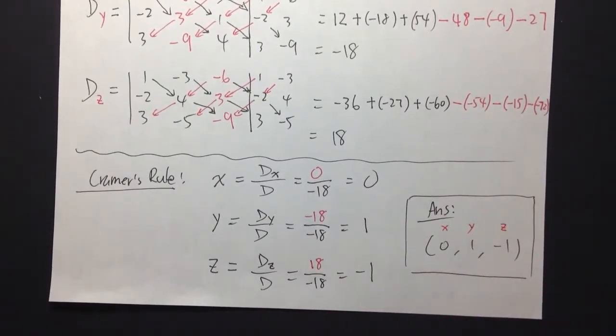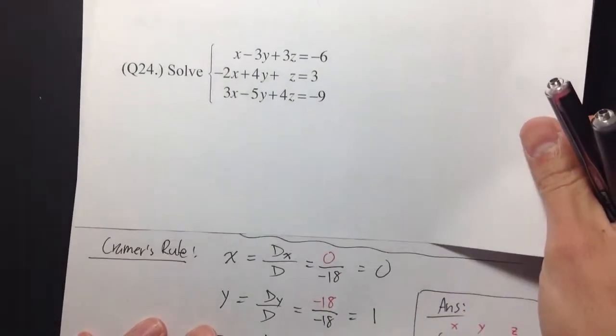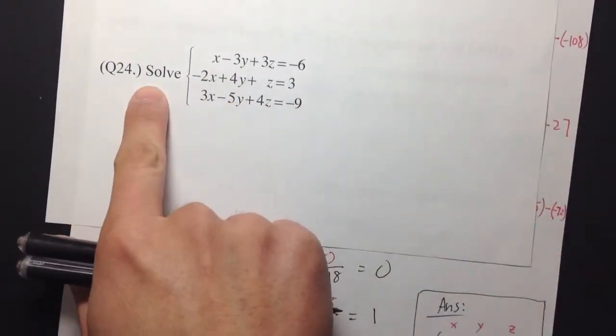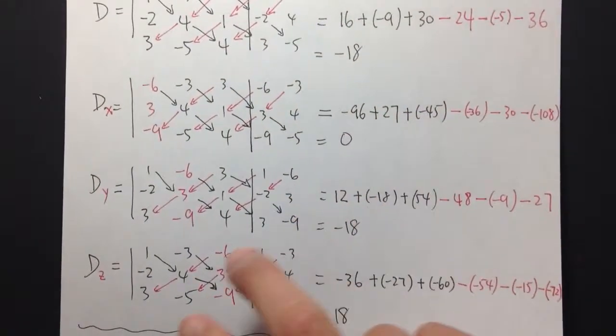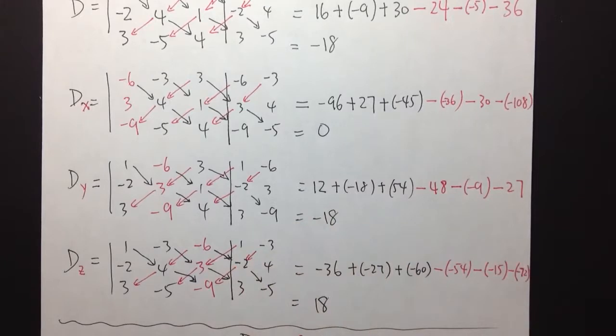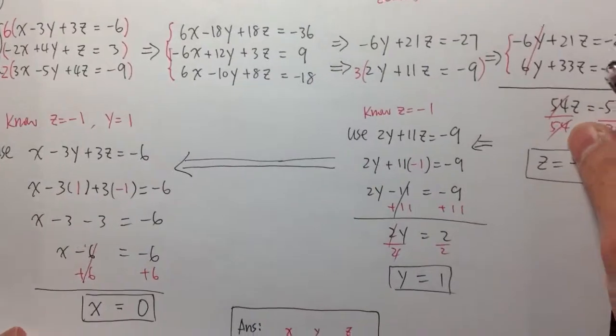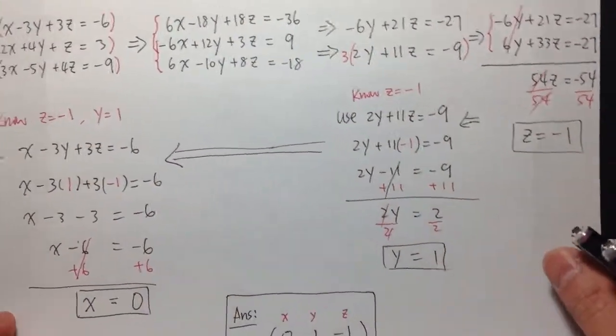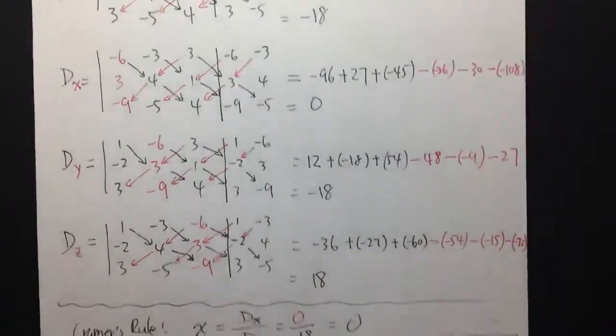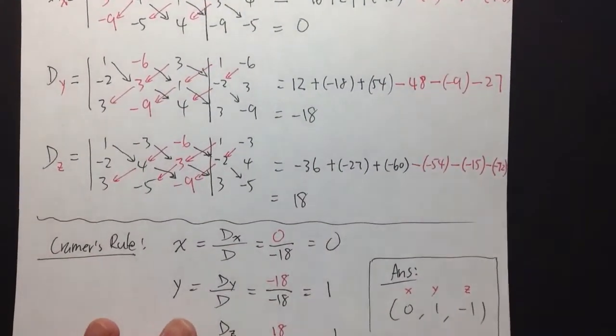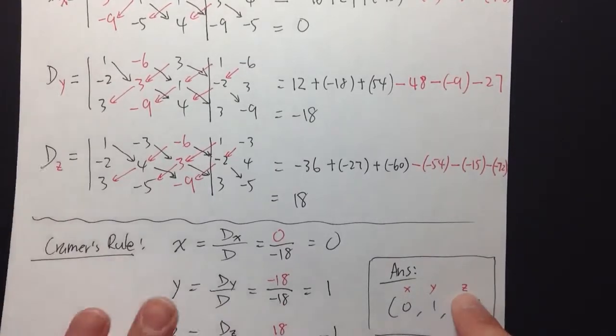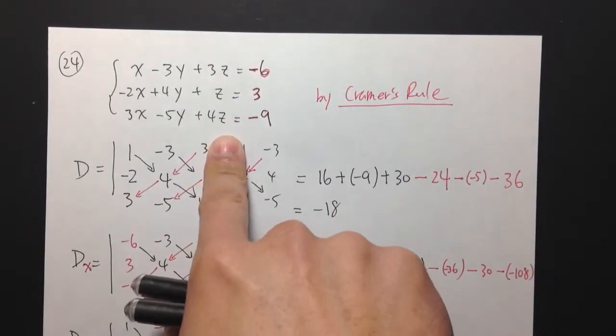So it really depends on which method you like. If the question doesn't specify which method you have to do, then either you do Cramer's Rule or the addition method - either method should be fine. As you can see, we get the same answer from both methods. Check out the next video. I will show you guys how to solve this on the calculator to check your answer.